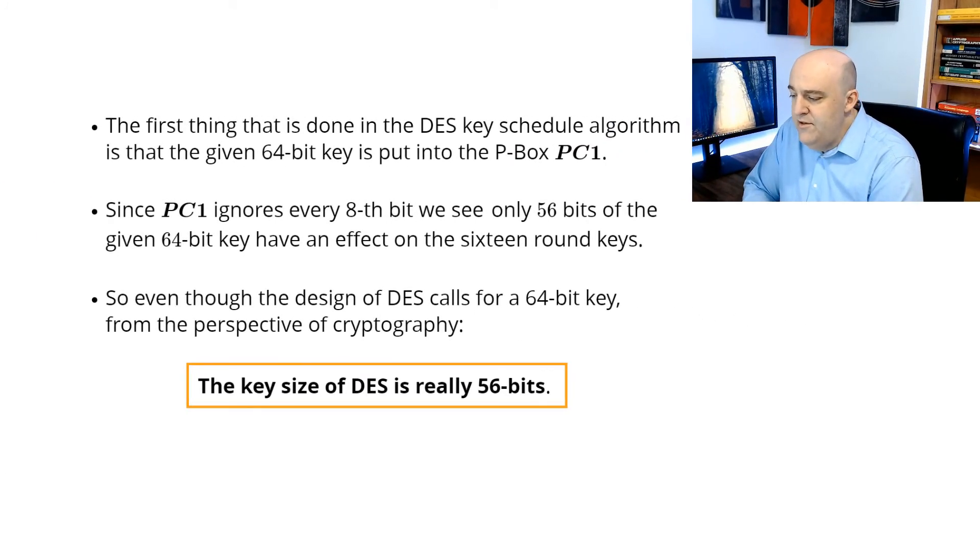So from a perspective of cryptography, really DES is not taking in a 64-bit key. The design does, but from the perspective of key strength, it's a 56-bit key. It's only 7 bytes, right? 7 times 8, 56. So that's why we say the block cipher DES really uses a key length of 56 bits, not 64 bits.